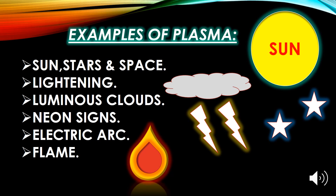Do you know that about 99% of the universe is in a state of plasma? Plasma is formed in the atmosphere of the sun, stars, and the upper region of the atmosphere. This means that the sun, stars, as well as space itself contain plasma.